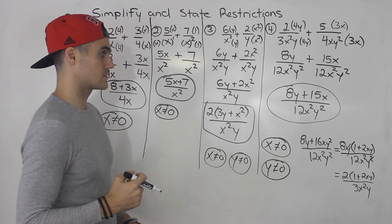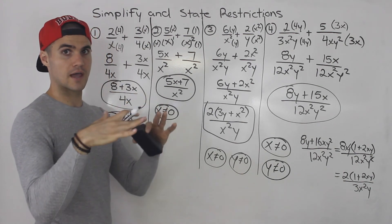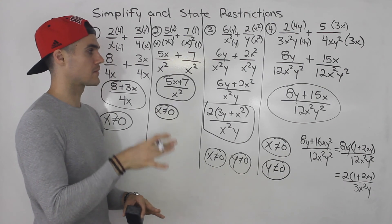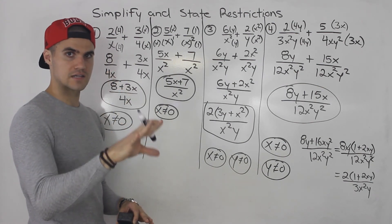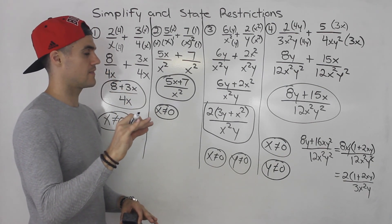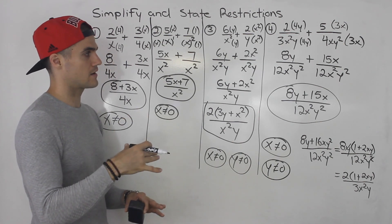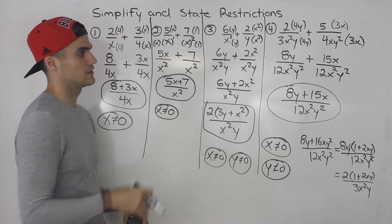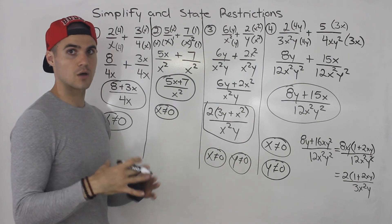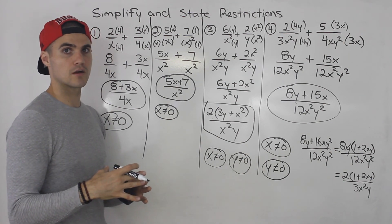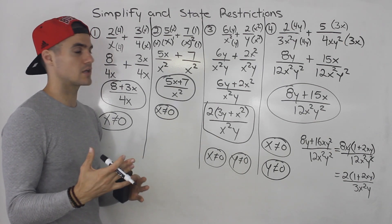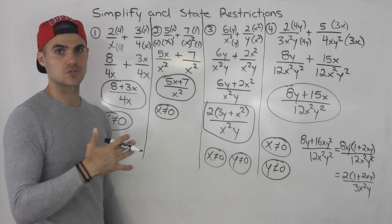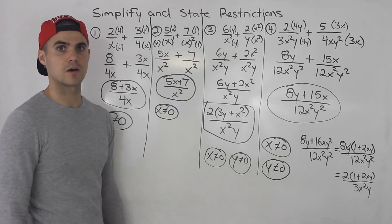So the same general steps as before when multiplying and dividing: factor, state restrictions, and then simplify. When adding and subtracting, you have to find a lowest common denominator first, which can get tricky. In future videos, I'll do as many different examples as possible so you can be aware of all the different scenarios.